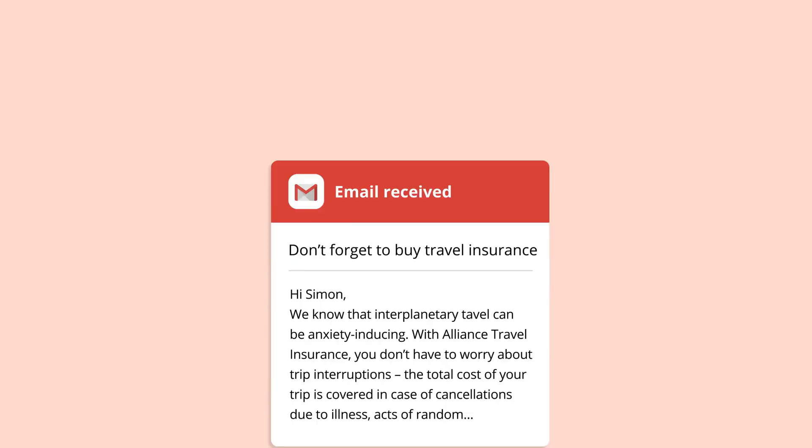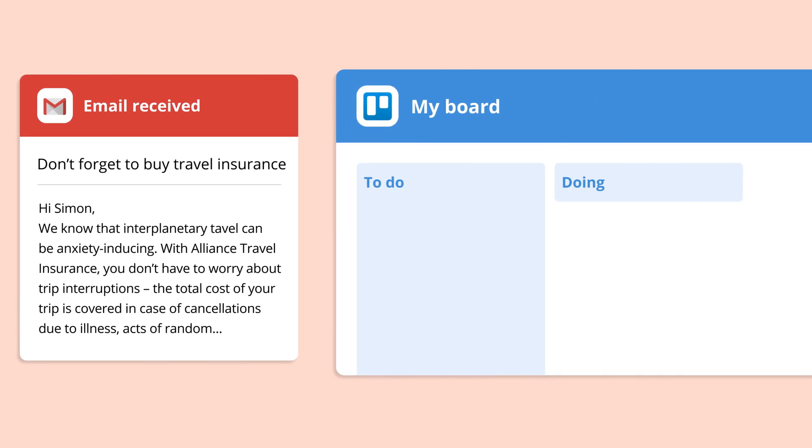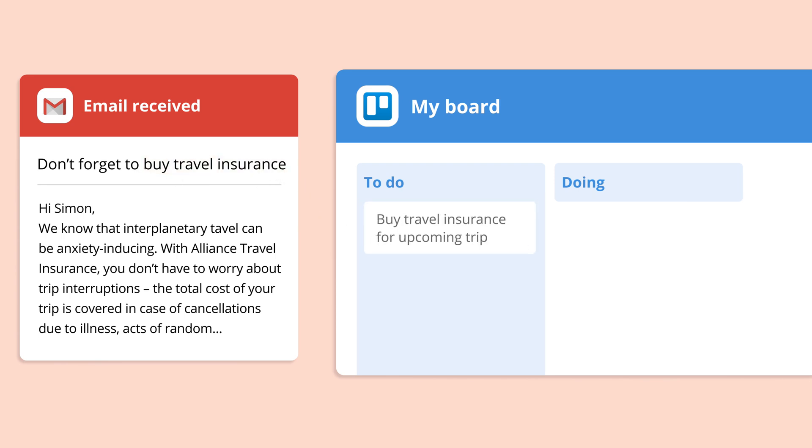You can recognize when something should be automated, whether that's a task you have to do very frequently like moving information between apps, or a task that takes time away from something you want to be doing. When you automate, you have more time, reduce human error, and most importantly, quickly solve problems.